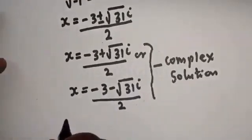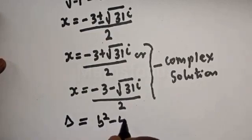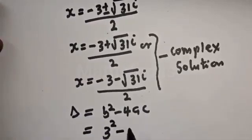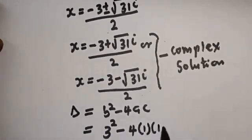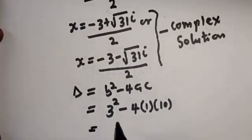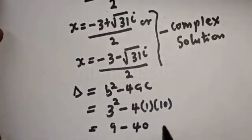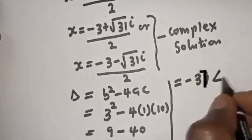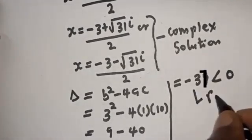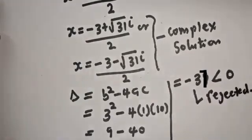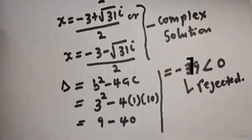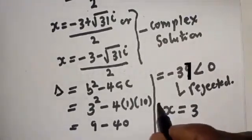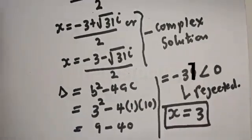We can confirm using the discriminant: b squared minus 4ac equals 3 squared minus 4 times 1 times 10, which equals 9 minus 40, giving minus 31. Since this is less than 0, the quadratic yields no real solutions and is rejected. The only real solution is s equals 3.